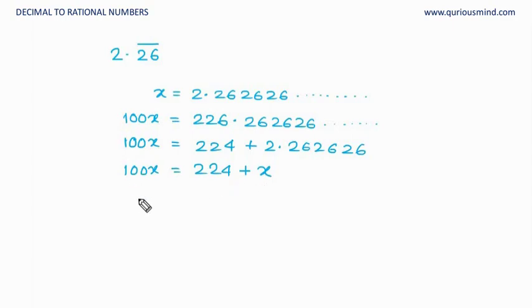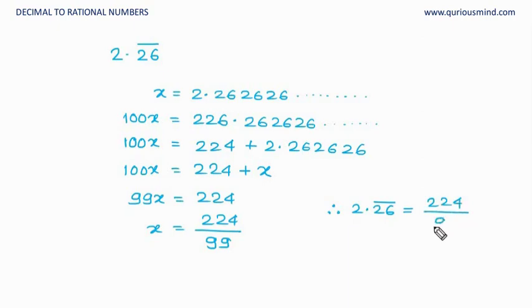x goes that side becomes minus, 99x is equal to 224 and therefore x is equal to 224 divided by 99. And hence 2.26 bar here is equal to 224 upon 99. Got it?